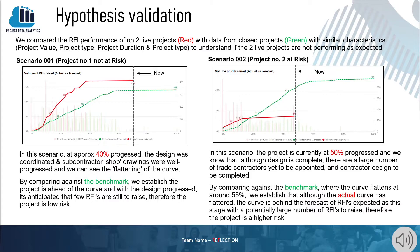In scenario two, the project is currently at 50% and although design is complete, there are a large number of trade contractors yet to be appointed and design still to be completed. Comparing against the benchmark where the curve flattens at around 55%, we established that although the actual curve has flattened, it is behind the forecast of RFIs expected at this stage, with a potentially large number of RFIs still to be raised — therefore the project is at higher risk.